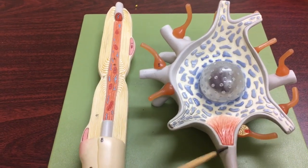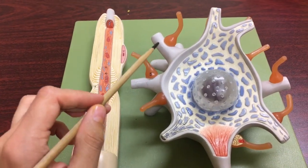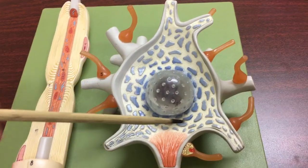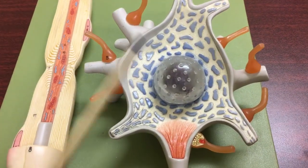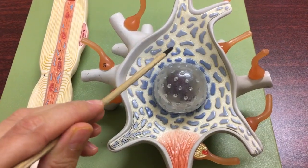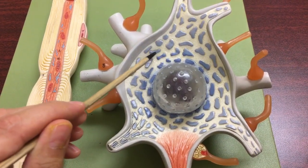We can see all the different extensions here. This is the body of the neuron and this is going to be the nucleus. These blue structures are called Nissl bodies.